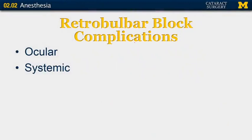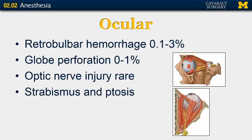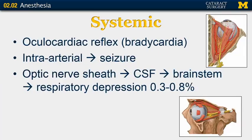Retrobulbar block complications are rare but can be quite serious. They are divided into ocular and systemic. Ocular complications include retrobulbar hemorrhage — if any blood vessels in the intraconal space are sheared it can cause hemorrhage — globe perforation especially in those with long axial length or staphyloma, optic nerve injury, and strabismus and ptosis. Systemic side effects include the oculocardiac reflex: when the globe is compressed or the extraocular muscles are manipulated, it can cause bradycardia. If the anesthetic is injected intra-arterially it can lead to a seizure, or if injected within the optic nerve sheath it can extend to the brain stem causing severe respiratory depression.